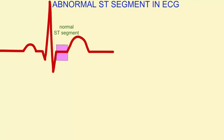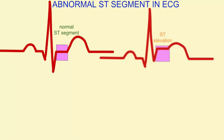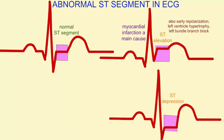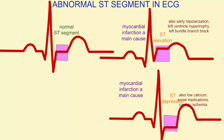The ST segment is usually at baseline, in between the end of the QRS complex and the beginning of the T wave. It can be elevated — this is often an indication of myocardial infarction. It can also be depressed. While myocardial infarction is the main cause, calcium levels, some medications, and ischemia of the cardiac blood vessels can also be causes.